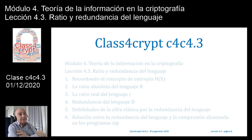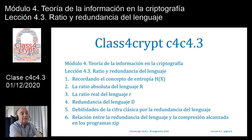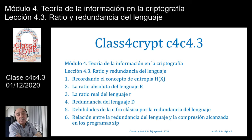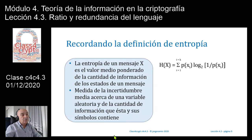Vamos a comenzar la clase de hoy, que es la tercera de este módulo 4: teoría de la información en la criptografía, con el título Ratio y redundancia del lenguaje. Nuestra agenda va a ser la siguiente: 1. Recordando el concepto de entropía. 2. La ratio absoluta del lenguaje. 3. La ratio real del lenguaje. 4. Redundancia del lenguaje. 5. Debilidades de la cifra clásica por la redundancia del lenguaje. 6. Relación entre la redundancia del lenguaje y la comprensión alcanzada en los programas CIT.